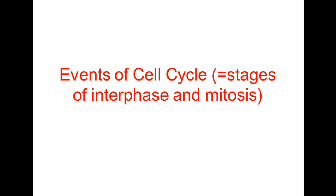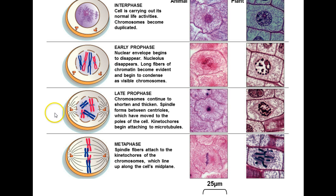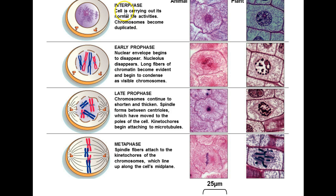First off, we have these diagrams showing what's going on during the cell cycle, and we have photos of the plant cells and the animal cells going through these various stages. In lab, you had to be able to identify these stages of interphase through telophase looking through the microscope. For lecture, you're going to need to be able to identify these stages of interphase, prophase, metaphase, anaphase, and telophase by looking at the diagrams. On the test, we'll have a set of diagrams that are jumbled around, and you'll need to be able to identify which stage you're looking at.